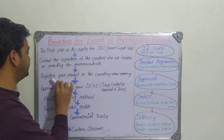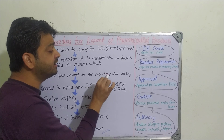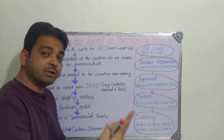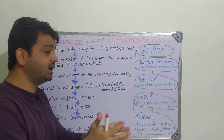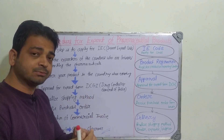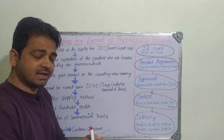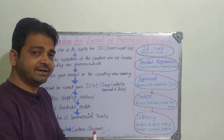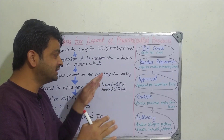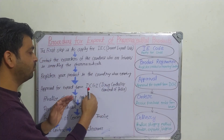The third step is to register your product in the country you are exporting to. Suppose you are exporting to Australia — the particular pharmaceutical product, whether tablet, capsule, or whatever dosage form the Indian manufacturer has, must be registered in Australia before you can go forward.